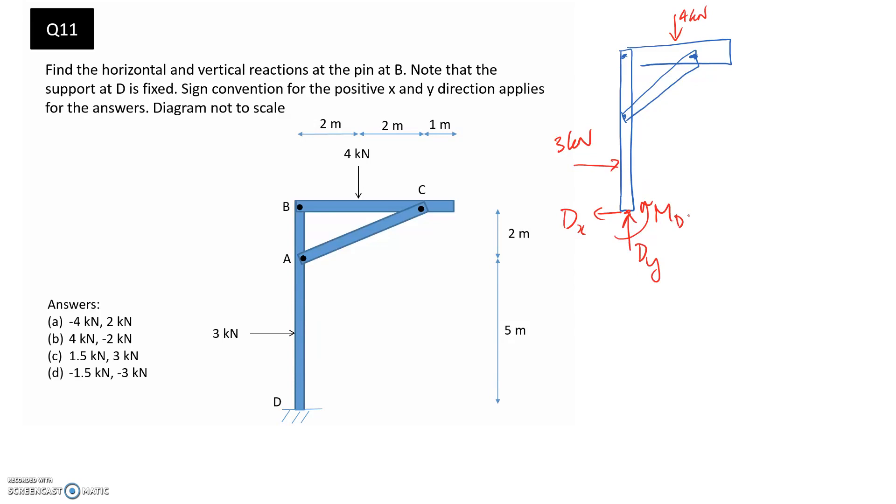We're not actually interested in what these are, so we don't really have to solve for them. What we are interested in is the forces at the pin at B. In order to expose those forces, we're going to need to break apart our frame into the components. It's got three different components: this vertical one, this horizontal one, and this diagonal one.